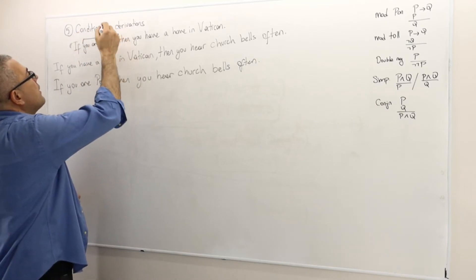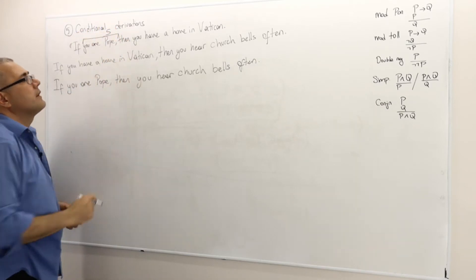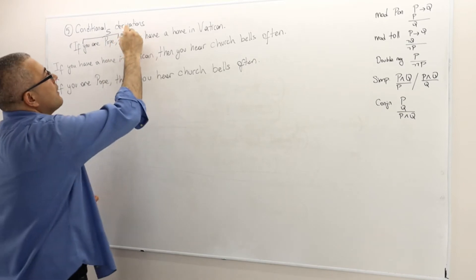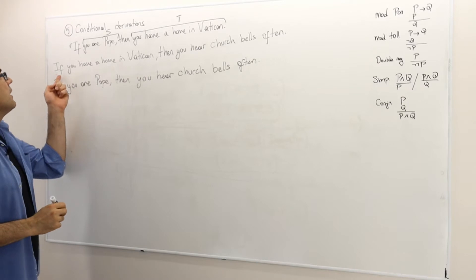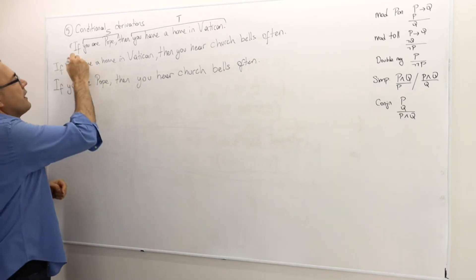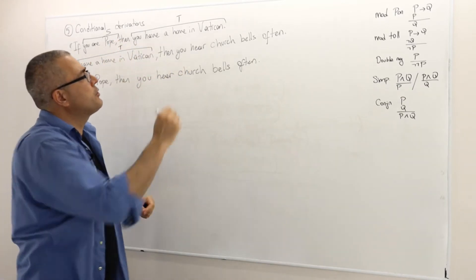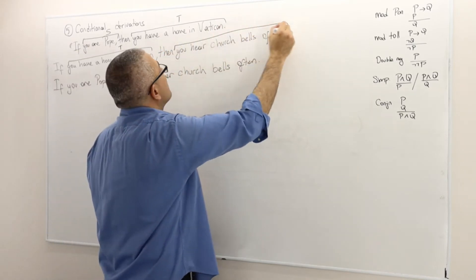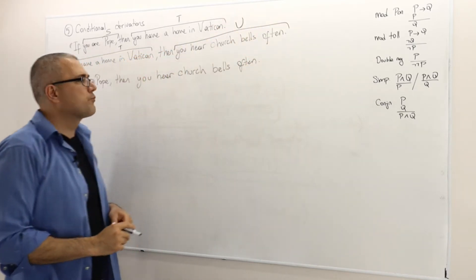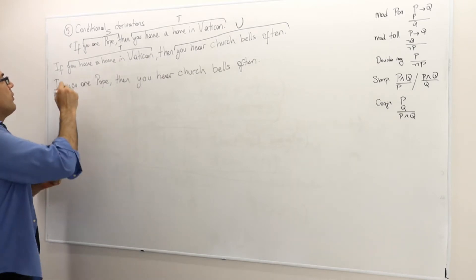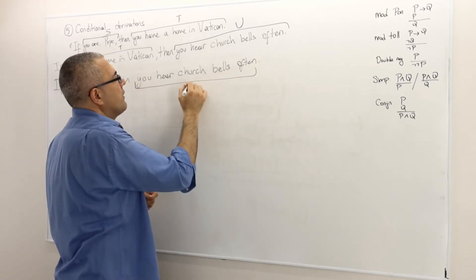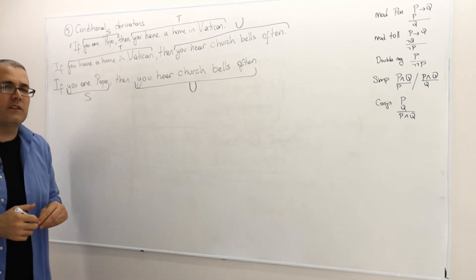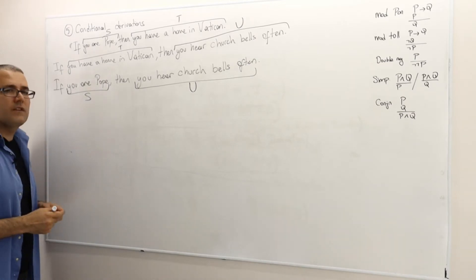You are Pope, let's call it sentence S. You have a home in Vatican, let's call this sentence T. If you have a home in Vatican, this is again T. Then you hear church bells often, this is a new sentence, let's call it U. And therefore if you are Pope, the sentence is S. Then you hear church bells often, we already know that this sentence is U. So there are three atomic sentences.